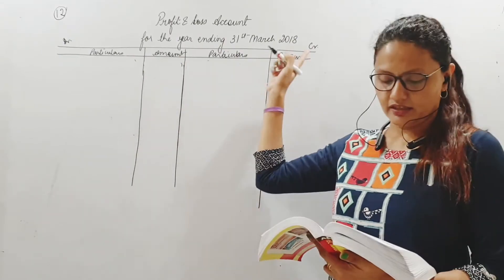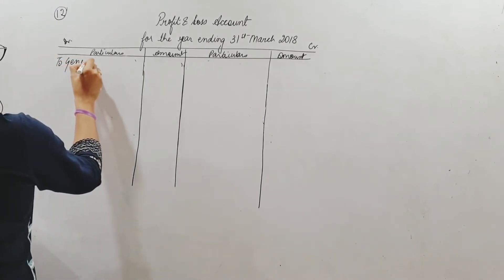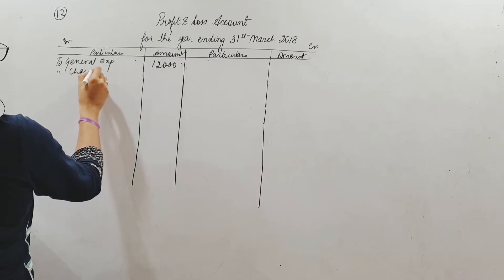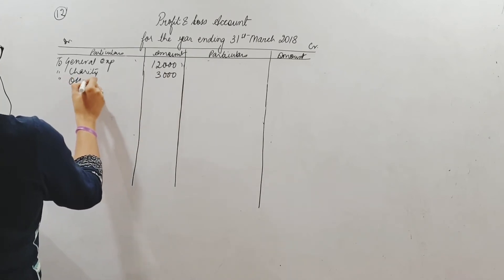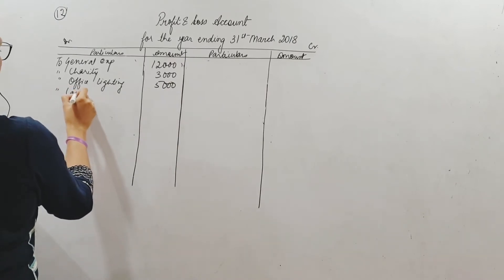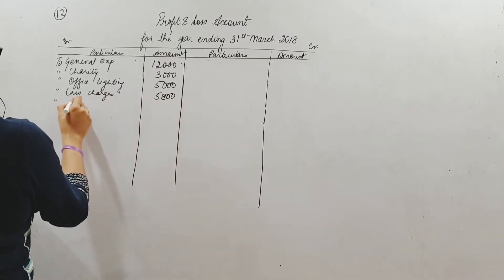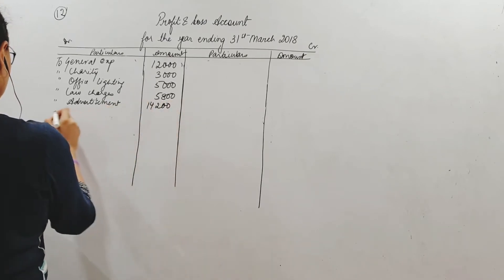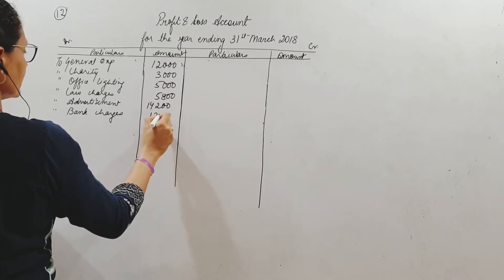Profit and Loss Account, for the year ending — please write out the heading, otherwise you will lose marks. General expenses usually are related to your office unless otherwise specified. Charity means goods or money distributed as donations — that is part of office expenses. Lighting, office electricity. Legal charges or law charges are again indirect expenses, so they come to the profit and loss account. Advertisement and all selling and distribution expenses including advertisement should come as an indirect expense. Then bank charges — meaning charges levied by the bank for providing services.